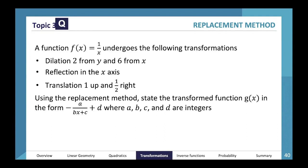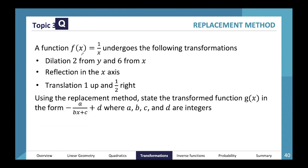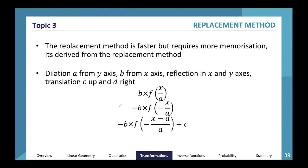Let's go through this question. A function f(x) = 1/x undergoes the following transformations: a reflection in the x-axis, a translation one up, and one-half right. Using the replacement method, we need to state the transformed function g(x) in the form minus a divided by (bx + c), plus d, where a, b, c, and d are integers.